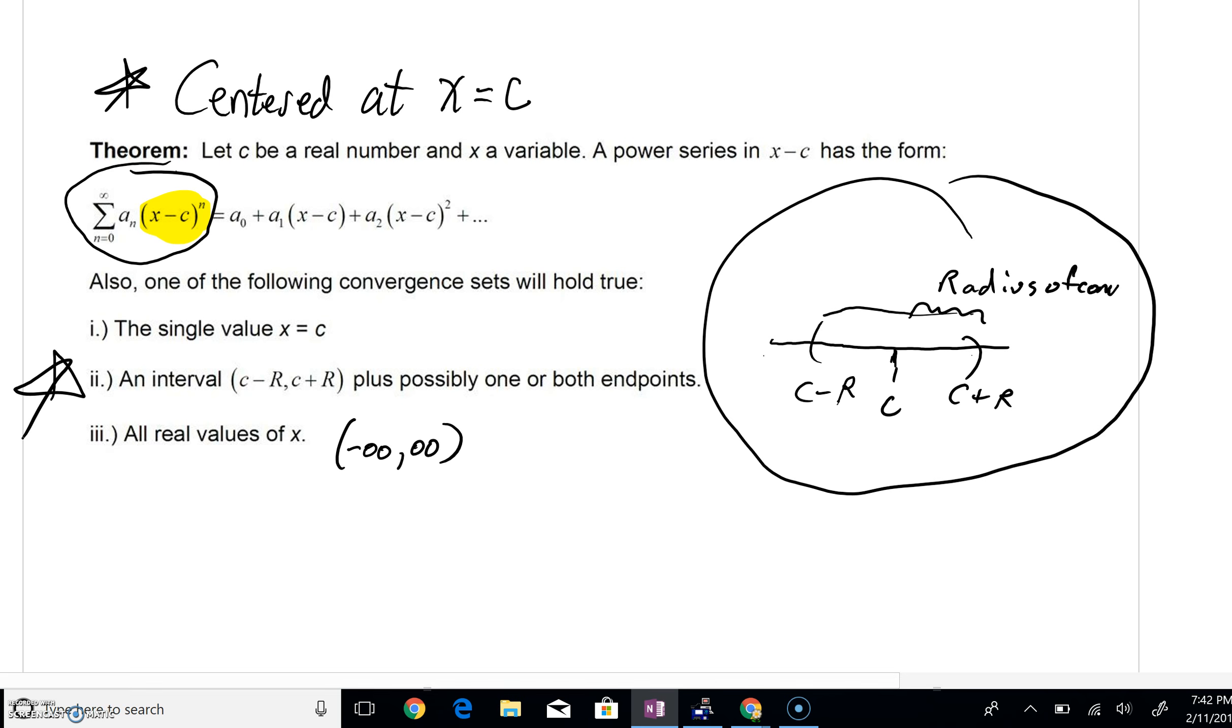We could have both endpoints, maybe neither, possibly one of the endpoints working out. We also could have just one single value, x equals c. You can pretty much see that that would be a very boring kind of convergence. It would be trivial convergence. Plug in x equals c and sigma would always have a zero. So we never get divergence in this regard. At the bare minimum, we'll always converge at least at x equals c.